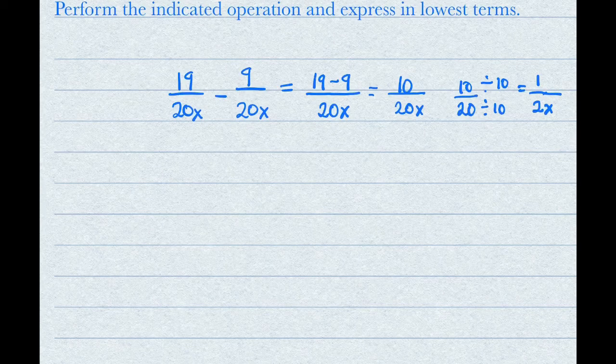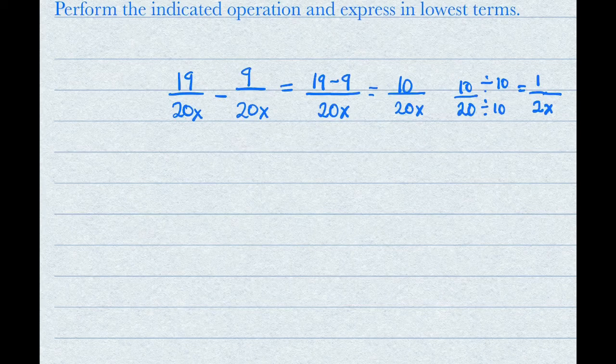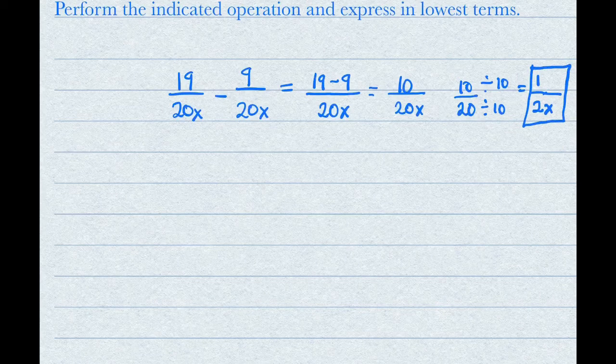Now you have the coefficients in lowest terms. You can put the x back in the denominator. So 1 over 2x is the final answer here.